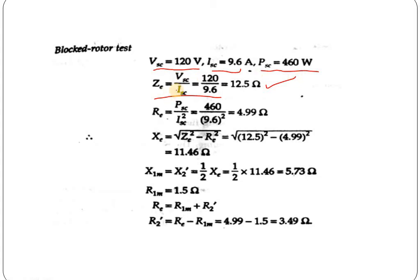Putting in the wattmeter reading of 460W and ammeter reading of 9.6A, we get the equivalent resistance value as 4.99 ohm. Now, we put this equivalent resistance value and equivalent impedance value to calculate the equivalent reactance XE. XE equals root over (ZE squared minus RE squared), which is root over (12.5 squared minus 4.99 squared), which equals 11.46 ohm.